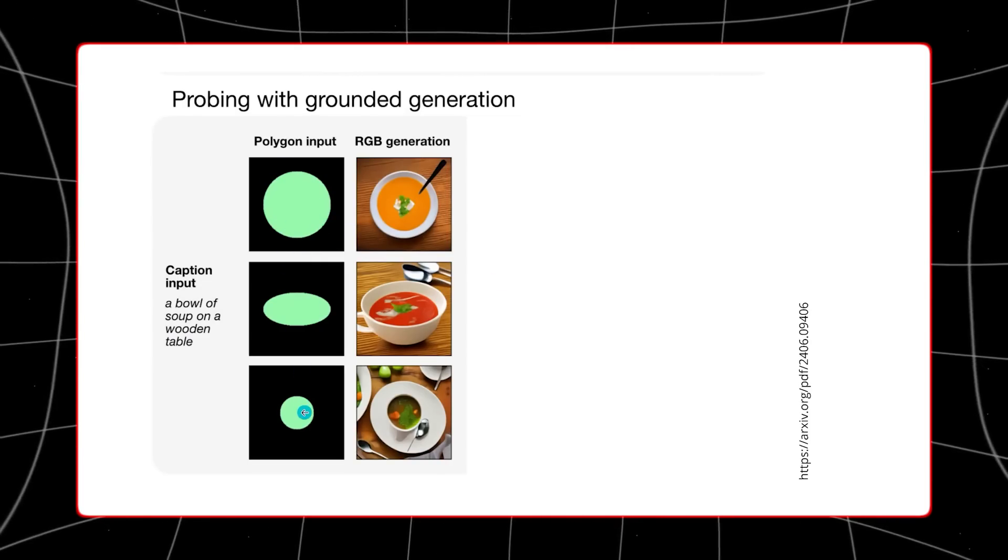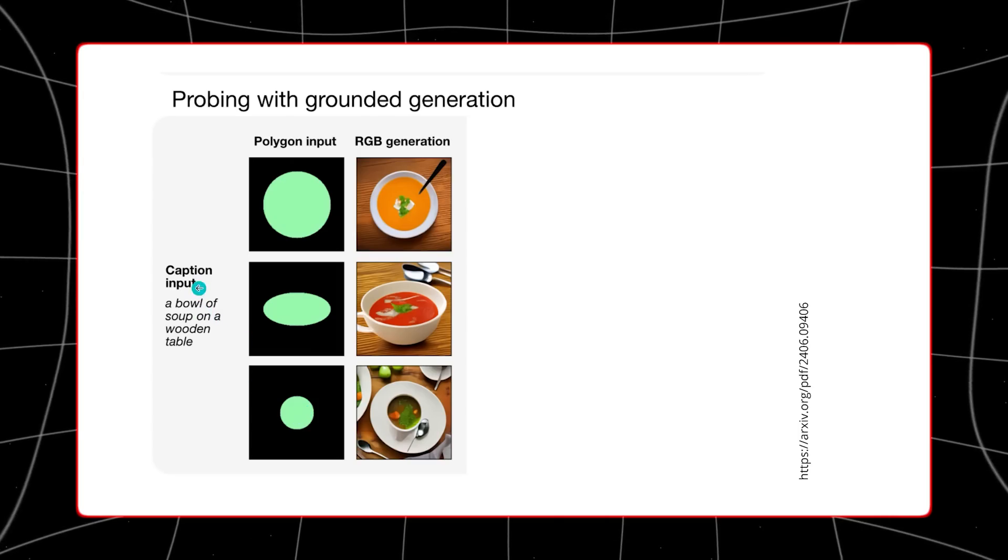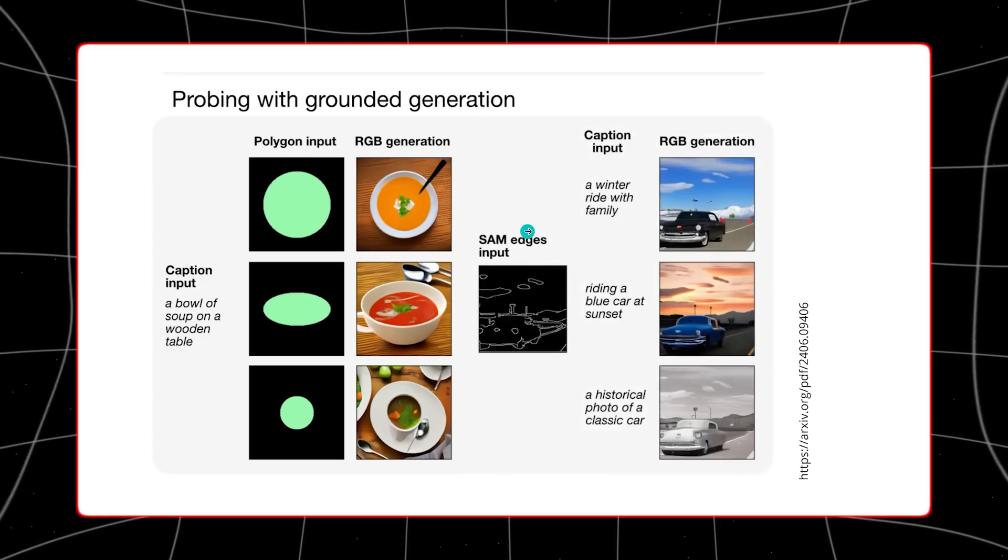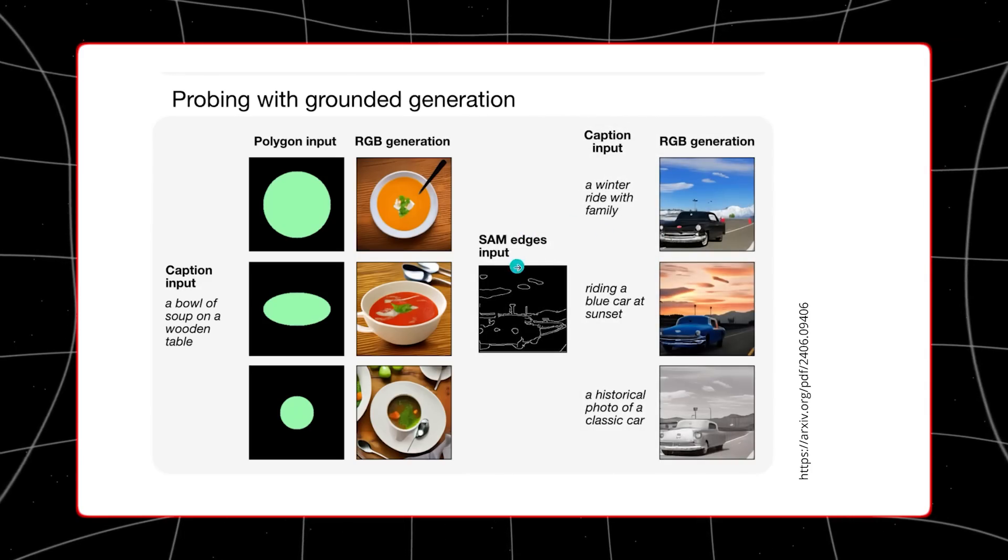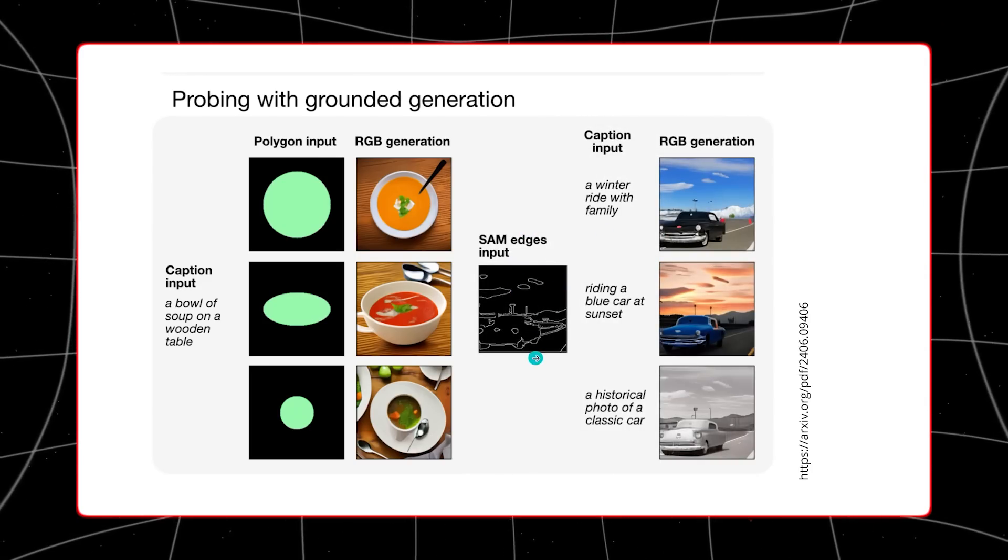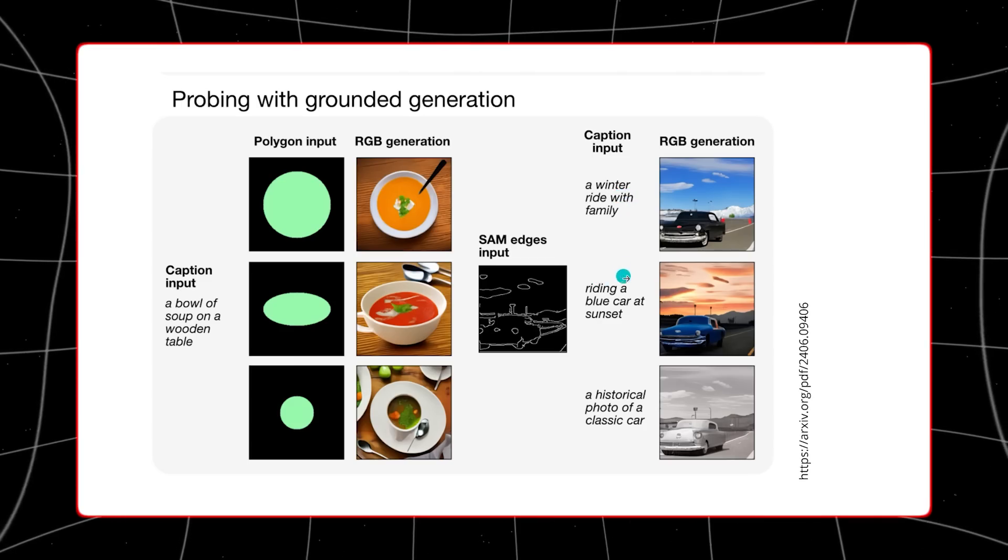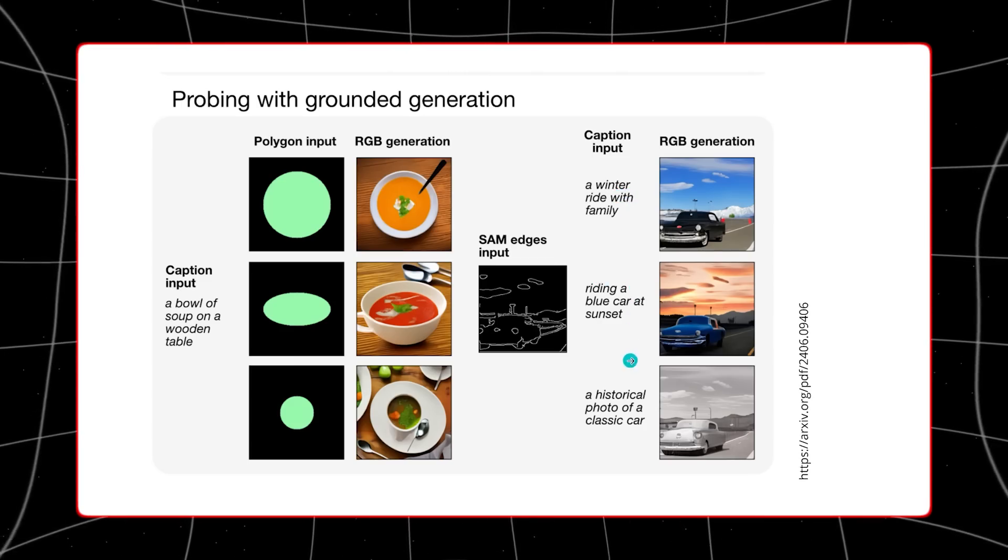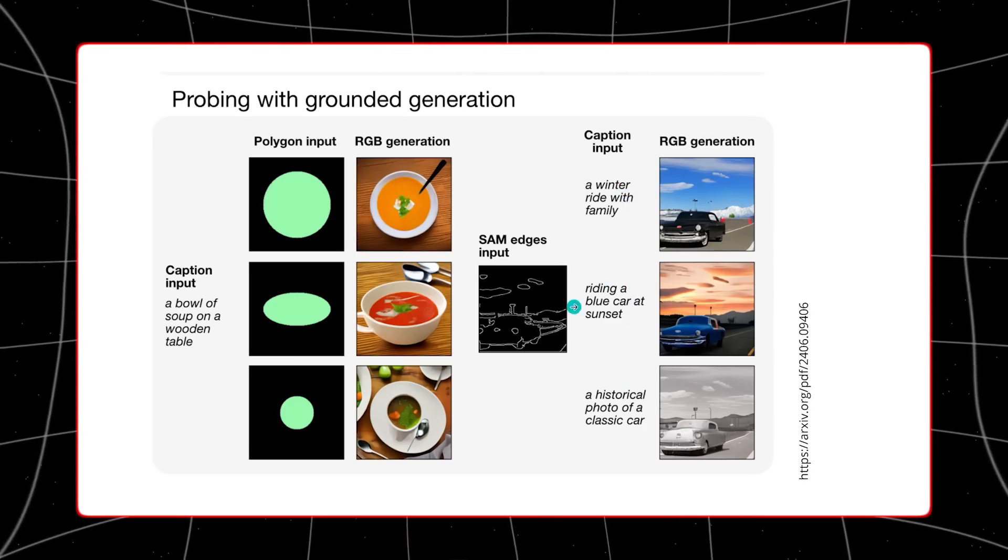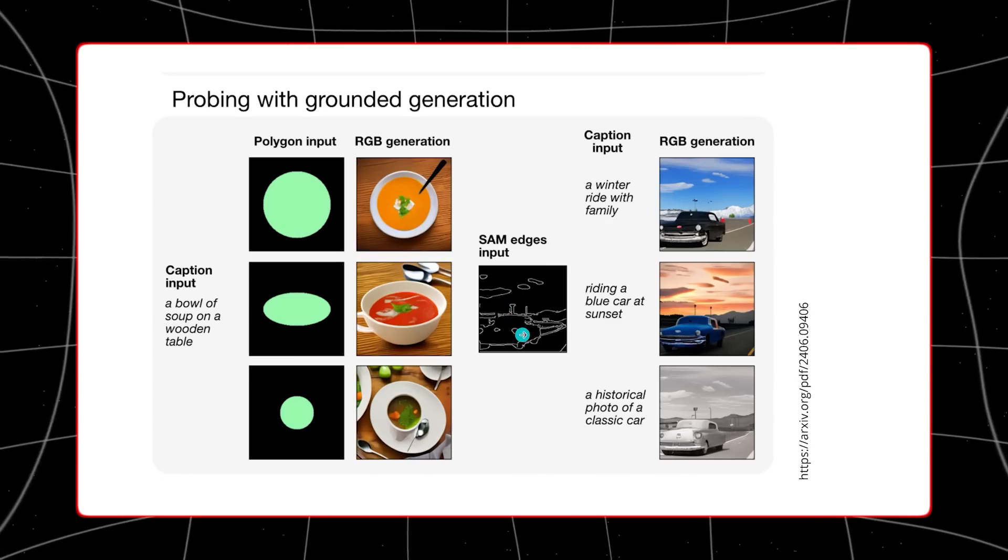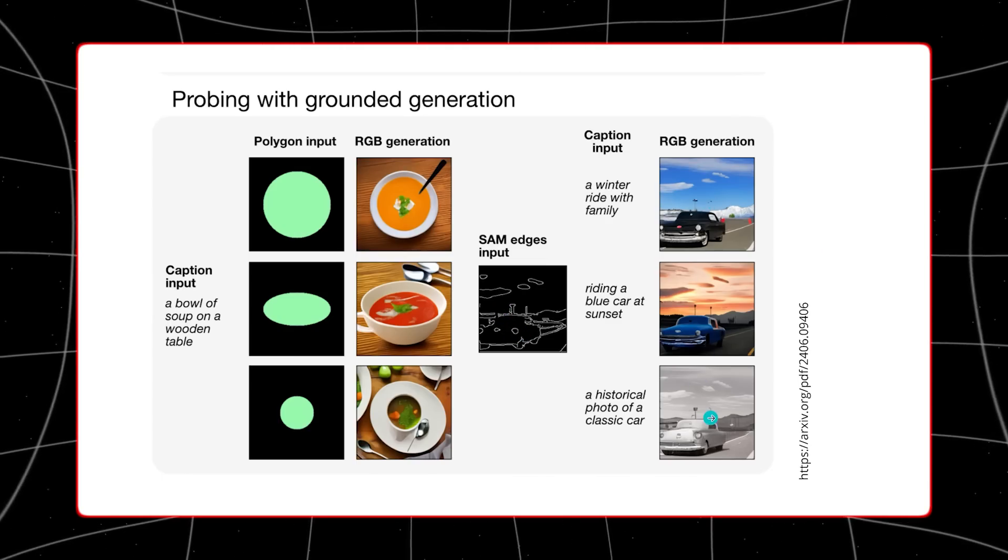One of the standout features of the Apple 4M AI model is its ability to create images from text descriptions, as shown in its demo here. This functionality allows users to input a detailed description of a scene, object, or person, and the model generates a corresponding image. For instance, if a user describes a sunset over a mountain range with a lake in the foreground, the AI can produce an image that captures these elements accurately.